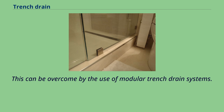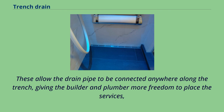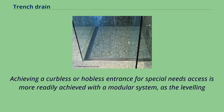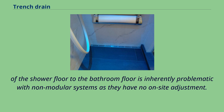This can be overcome by the use of modular trench drain systems. These allow the drain pipe to be connected anywhere along the trench, giving the builder and plumber more freedom. This reduces construction time and costs, particularly in high-rise situations where moving plumbing services can be nearly impossible. Achieving a curbless or hobless entrance for special needs access is more readily achieved with a modular system, as leveling the shower floor to the bathroom floor is inherently problematic with non-modular systems, which have no on-site adjustment.